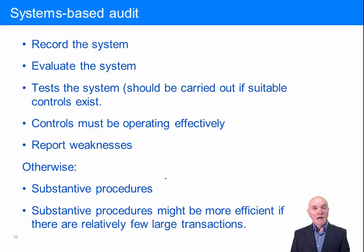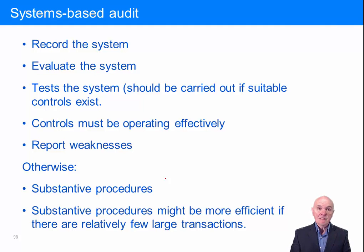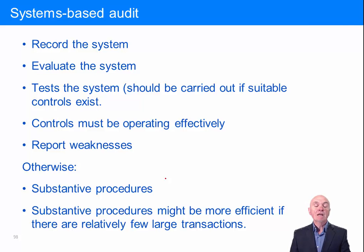If we can't rely on controls, we have to change over and do substantive testing. What we're really saying is the company and its staff are taking inadequate steps to control the transactions and safeguard the assets. If the company isn't doing it, then we as the auditors are the last line of defence, to try to ensure that the financial statements are free of material misstatement.